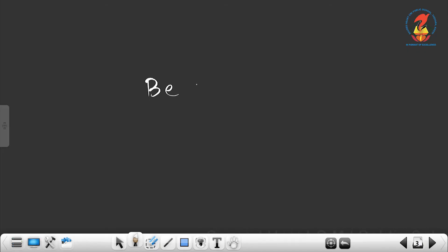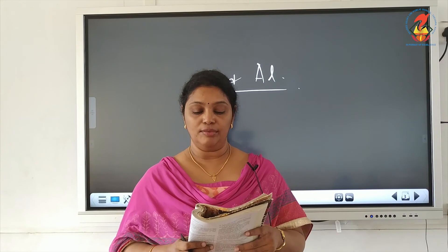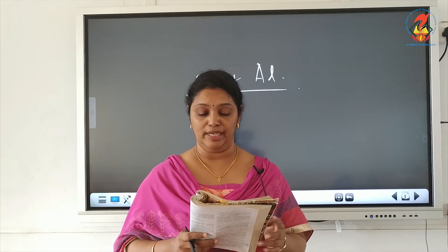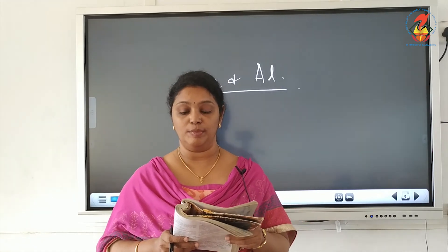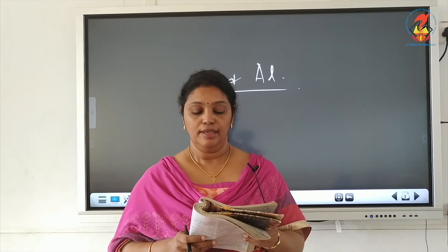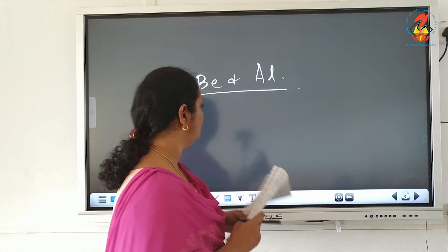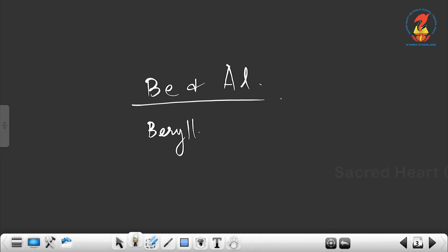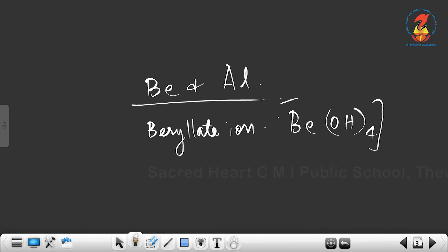The oxide and hydroxide of beryllium, unlike those of other elements in the group, are amphoteric in nature. Beryllium also shows a diagonal relationship with aluminium (which is in group 13). Like aluminium, beryllium is not readily attacked by acids because of the presence of an oxide film on its surface. Beryllium hydroxide dissolves in excess alkali to give the beryllate ion [Be(OH)₄]²⁻.